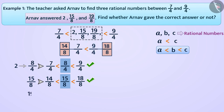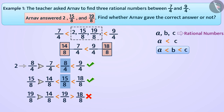If we talk about 19 by 8, we know that 19 by 8 is greater than 18 by 8, which means 19 by 8 is not between 7 by 4 and 9 by 4. Therefore, Arnav's answer is wrong. The correct rational numbers between 7 by 4 and 9 by 4 are 2, 15 by 8, and 17 by 8.